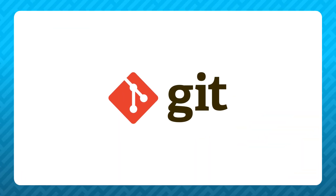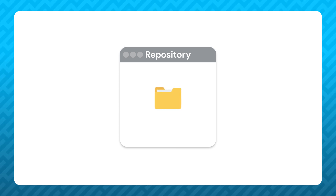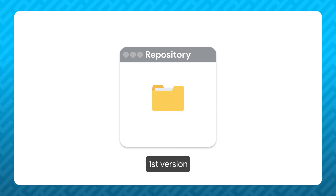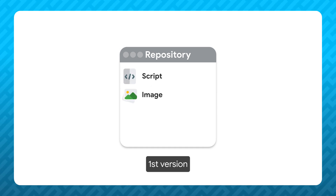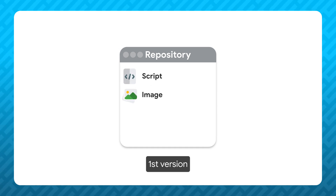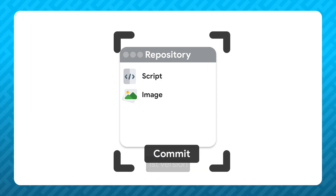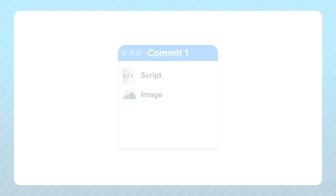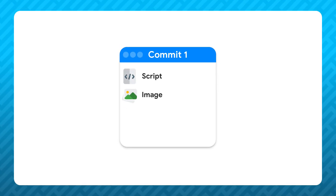Let's review how git works. First, you create a repo on your computer. This will look like a normal folder where you can place files. Imagine that for our first version of the game, we need to add a script and an image. If we would like to save this state, we need to commit those changes, which basically means that we will create a snapshot of the file structure with its appropriate name.